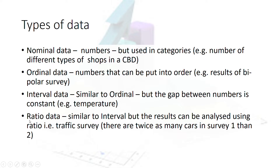The best type of data is ratio data. This is like interval data, but here you can use a ratio — so if there are 20 cars in survey one and 40 cars in survey two, then one has twice as many. Most of the tests we're going to use will use either ordinal, interval, or ratio data, so it's worth understanding these terms first.